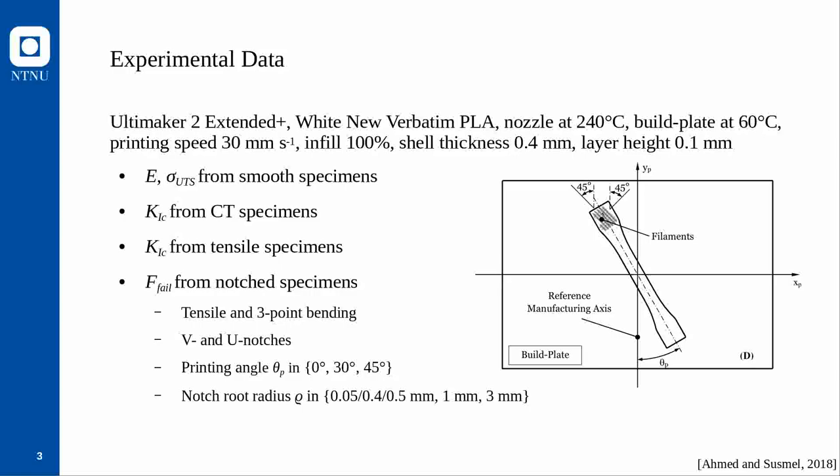Ahmed and Susmel printed smooth specimens to obtain Young's modulus and ultimate tensile strength, and obtained fracture toughnesses from both CT specimens and tensile specimens. They obtained failure forces and failure stresses from notched specimens across a variety of configurations: tensile and three-point bending tests, each for V and U notches, each for three different printing angles, and each for three different notch root radii.